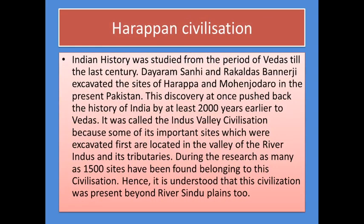Now let us go to the Harappan civilization. Indian history was studied from the period of Vedas till the last century. Dayaram Sahni and Rakaldas Banerjee excavated the sites of Harappa and Mohenjodaro in present Pakistan. This discovery pushed back the history of India by at least 2,000 years earlier than the Vedas. It was called the Indus Valley civilization because some of its important sites, excavated first, are located in the valley of the river Indus and its tributaries. During research, as many as 1,500 cities or sites have been found belonging to this civilization.